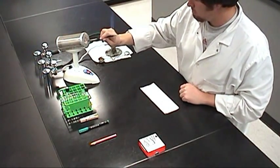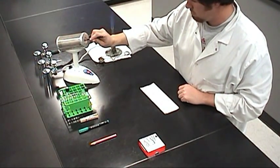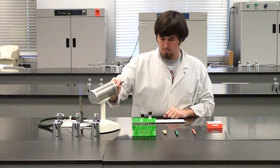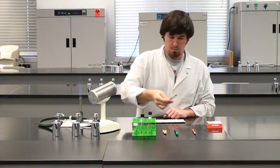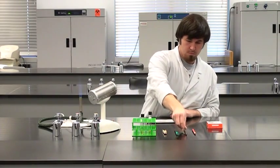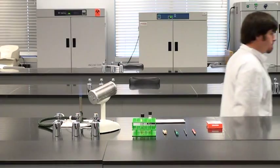Flame the loop one last time, then put it aside. Let the sample air dry completely to prevent distorting the size and shape of the bacteria during heat fixing.